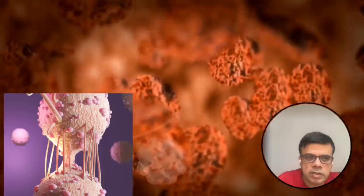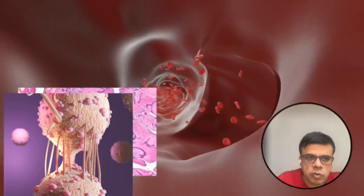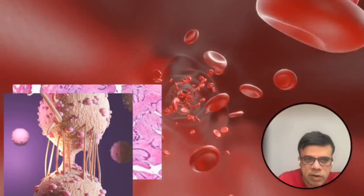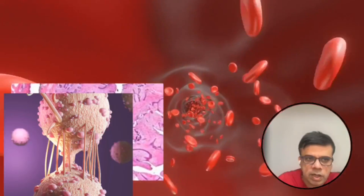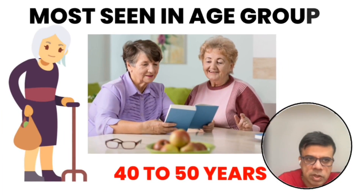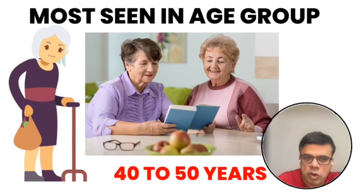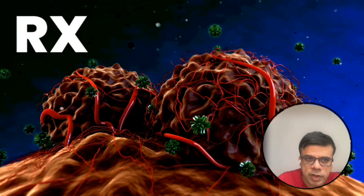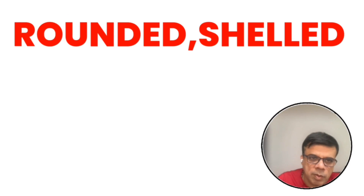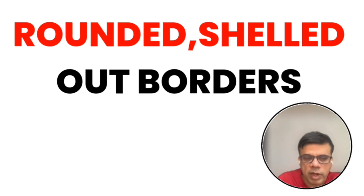Here you can see the image showing typical leaf-like architecture and cystic changes. Hemorrhage, stromal hyalinization, and myxoid changes are also indicated in long-standing phyllodes tumors. It is most commonly seen in the age group of 40 to 50 years, but may also occur beyond that.